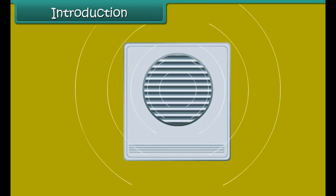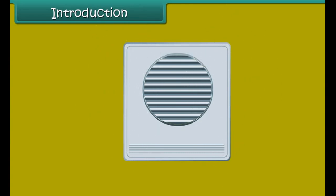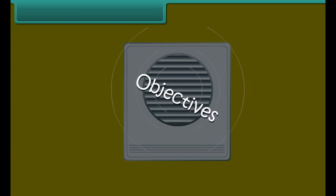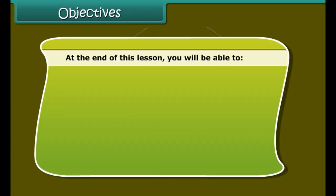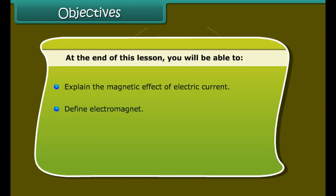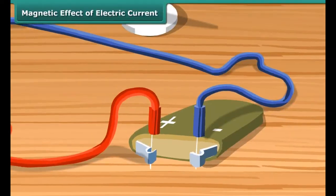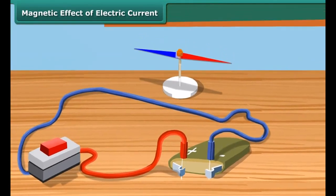Objectives: At the end of this lesson, you will be able to explain the magnetic effect of electric current, define electromagnet, and describe the working of an electric bell.